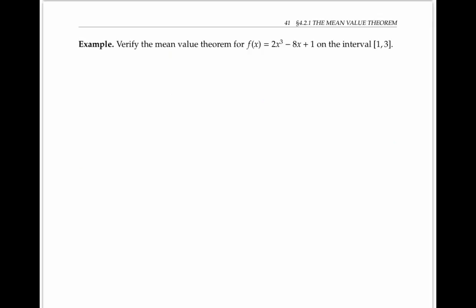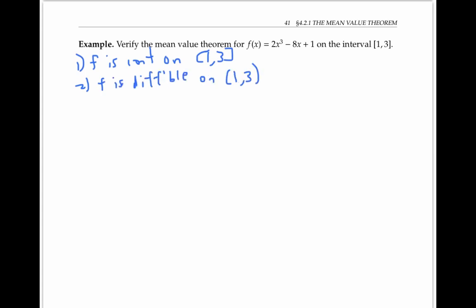In this example, we're asked to verify the mean value theorem for a particular function on a particular interval. Verify means that we need to check that the hypotheses of the theorem hold, and also that the conclusion holds. The hypotheses are that F is continuous on the closed interval [1, 3] and that it is differentiable on the interior of that interval. Both of these facts are true because F is a polynomial.